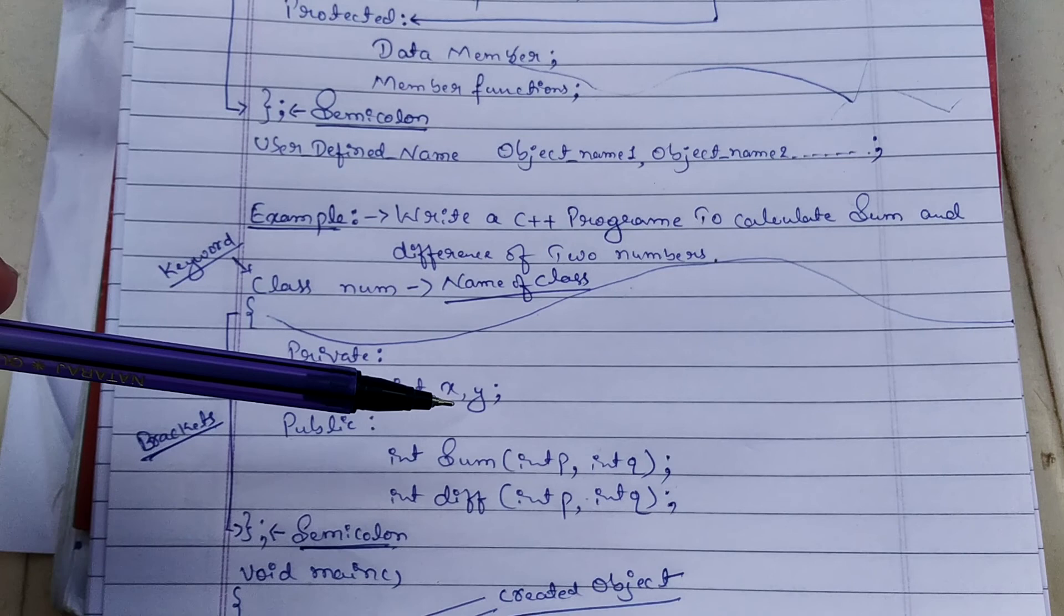The sum method takes int p and int q as integer variables. Next, the difference method also takes int p and int q, written in the same way.